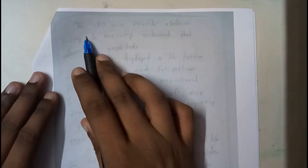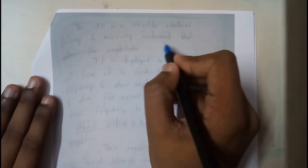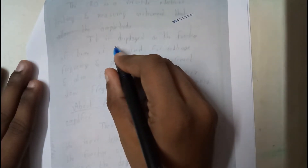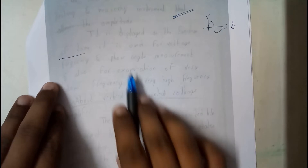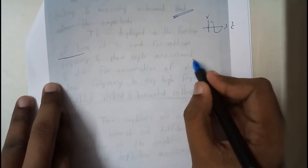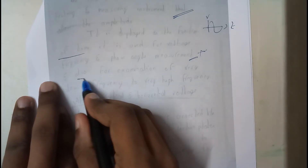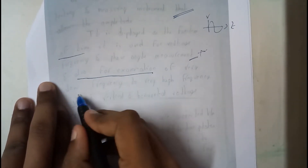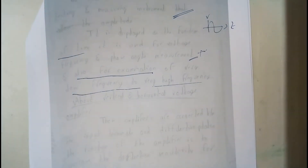The CRO is a versatile electronic testing and measuring instrument. It displays signals as a function of time — the graph shows voltage with respect to time. It is used for voltage, frequency, and phase angle measurement, and also for examination of very low and very high frequency signals. There is also a zoom-in and zoom-out capability using the vertical and horizontal knobs.